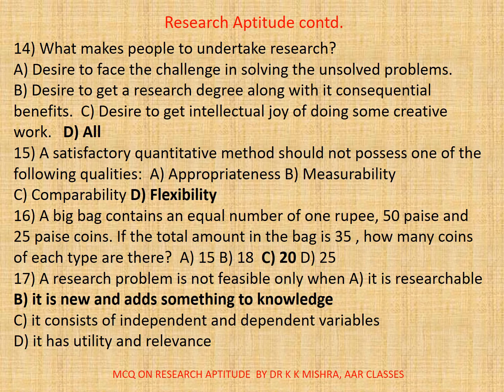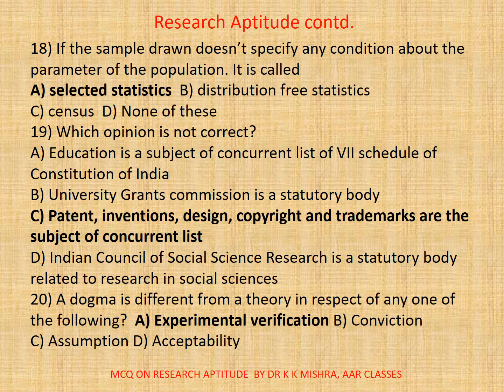Question seventeen: A research problem is feasible only when A: It is researchable. B: It is new and adds something to knowledge. C: It consists of independent and dependent variables. D: It has utility and relevance. The correct option is B: It is new and adds something to knowledge.